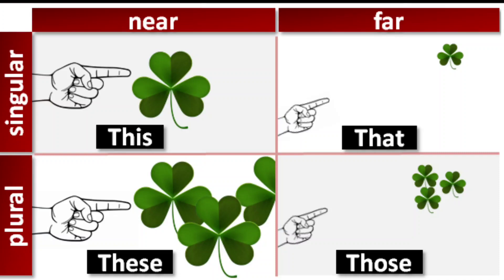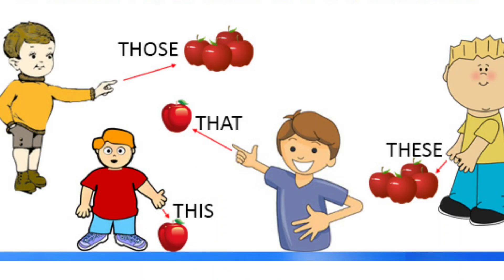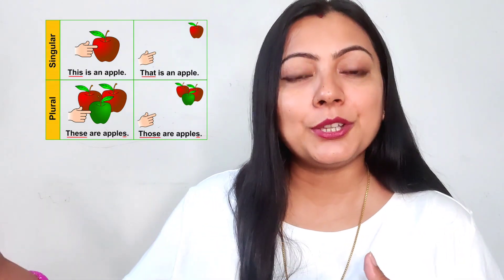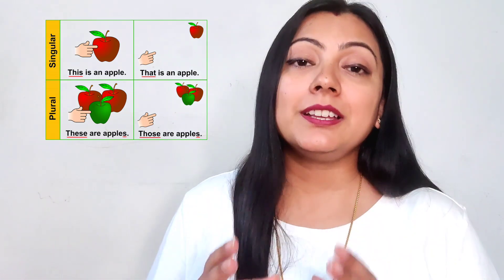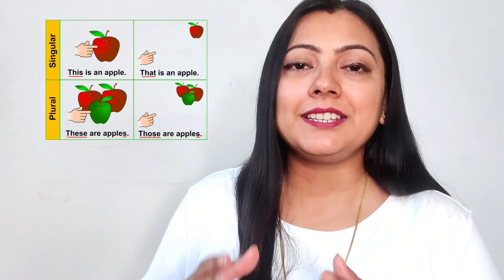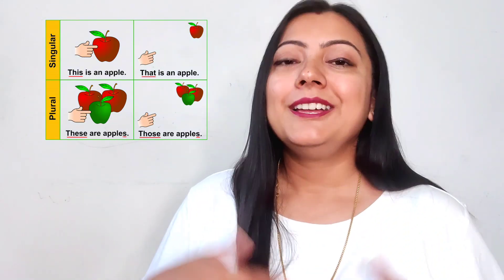So the concept is: this, that, these, those. We can understand through different pictures. Many apples far away: those are apples. One apple near: this is an apple. One apple far: that is an apple. Multiple apples near: these are apples. If it is a single object near, use 'this.' Single and far, use 'that.' Multiple and near, use 'these.' Multiple and far, use 'those.'